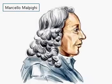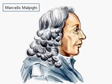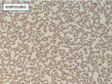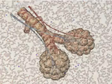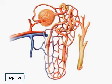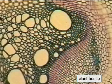Marcello Malpighi was a professor of medicine, who lived from 1628 to 1694, and developed methods of preparing microscopic specimens. He described, among other things, the structure of red blood cells, the vesicular structure of lungs, and the structure of renal tubules. He was also interested in the anatomical details of plant structure.